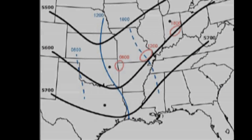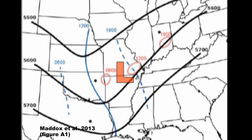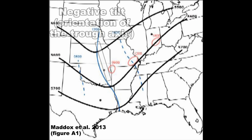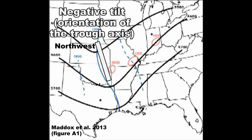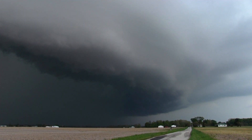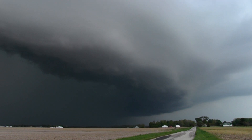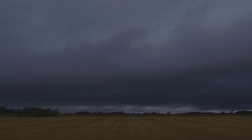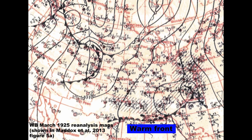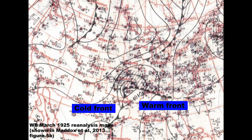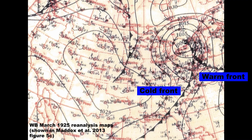The reanalyzed 500 millibar chart for noon on March 18th shows the progression of the low in tandem with the shortwave. The chart may also hint at a negative tilt developing in the trough — that is, a northwest-to-southeast orientation of the trough axis — which often leads to better dynamics and a more favorable environment for severe weather downstream. At the same time, multiple synoptic-scale boundaries were developing around the low. A warm front, initially along the Gulf Coast, was lifting northward to meet the low, and a cold front was sweeping in from the west as depicted by these reanalyzed weather bureau maps.